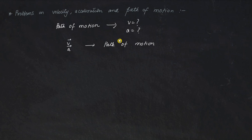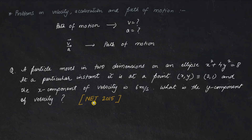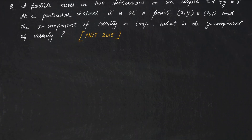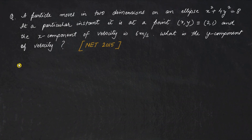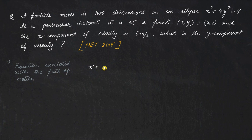Let's look at the first problem, which came in the NET examination in 2015. A particle moves in two dimensions on an ellipse x² + 4y² = 8. At a particular instant it is at the point (2, 1) and the x-component of velocity is 6 m/s. What is the y-component of velocity? You are given the path of motion equation x² + 4y² = 8.